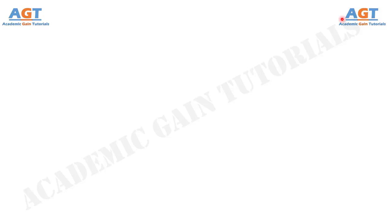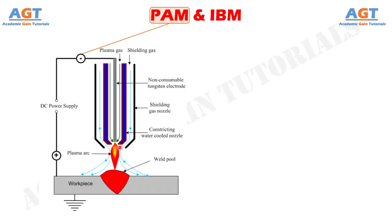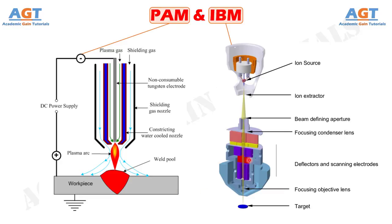Welcome to Academic Game Tutorials. In this video, we will look into the differences between plasma arc machining and iron beam machining. Plasma arc machining is one such advanced machining process where thermal energy, or heat, is primarily used to melt down and vaporize material from the workpiece. The iron beam machining process is another advanced machining process; however, its working principle is not based on thermal energy. Rather, it is one mechanical energy based process where momentum transfer takes place at the atomic level.